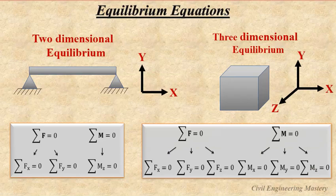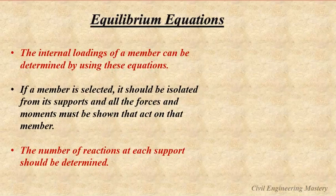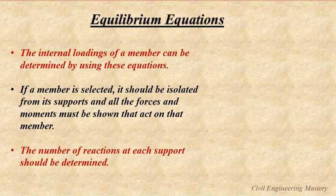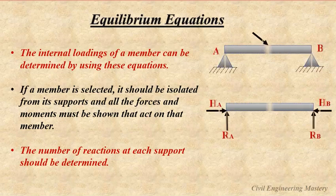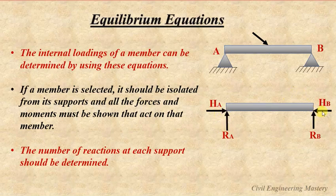These are the equations of equilibrium for two-dimensional and three-dimensional problems. The internal loadings of a member can be determined using these equilibrium equations. Once a member is selected, it should be isolated from its supports and all forces and moments acting on it must be shown. The number of reactions at each support — that is, the support reactions — should be determined. For example, for a beam, there are two possible reactions at each support.